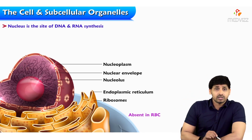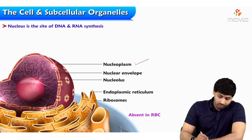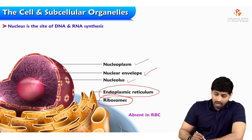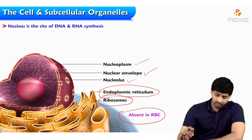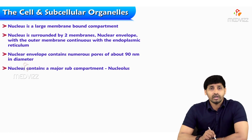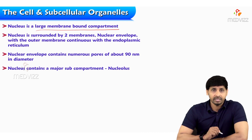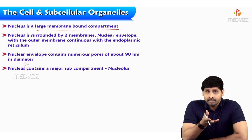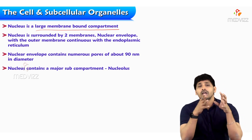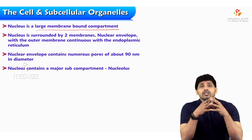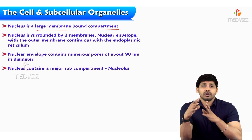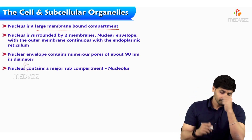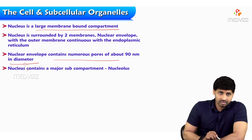Looking at the structure of the nucleus, there is a nucleoplasm, nuclear envelope, and nucleolus, with endoplasmic reticulum attached along with ribosomes. RBCs do not have a nucleus. The nucleus is a large membrane-bound compartment surrounded by two membranes — the nuclear envelope — continuous with the endoplasmic reticulum, because RNA synthesized in the nucleus is involved in protein synthesis, and those proteins need to be modified or packed in the endoplasmic reticulum.